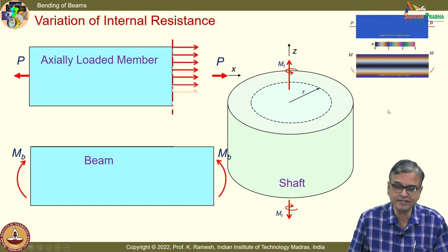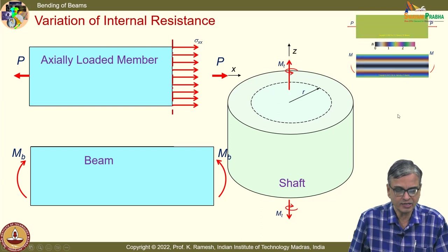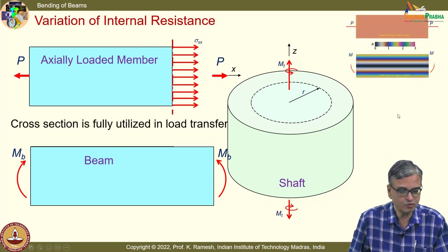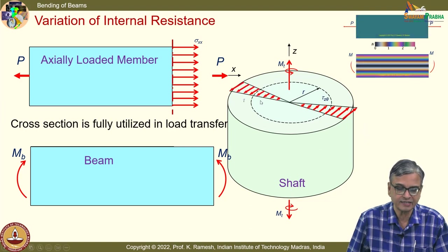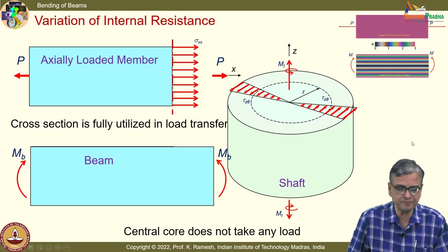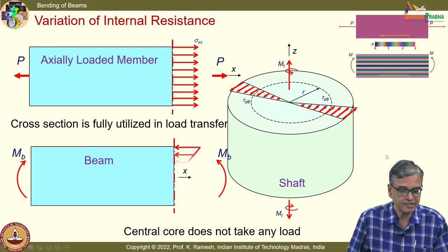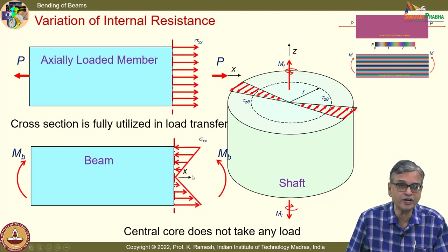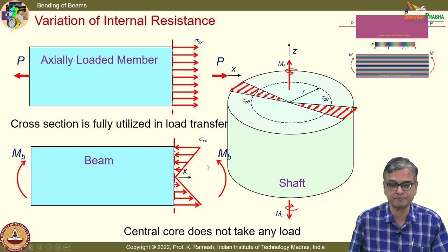For axial loading, stress is uniformly distributed. For torsion, it varies as a triangle — this is the variation of shear stress. And for a beam transmitting a constant bending moment, here again you have a triangular variation, but this variation is for normal stress, which is known as bending stress.